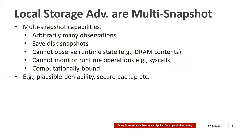A crucial observation is that local storage adversaries are usually not as powerful as online adversaries. Instead, most local storage adversaries have multi-snapshot capabilities — the adversary can have arbitrarily many observations of the device, save disk snapshots, and compare what has changed in between snapshots. However, the adversary cannot observe runtime state, such as the contents of the DRAM or file system caches, and it cannot monitor runtime operations such as syscalls. So in effect, what the adversary actually observes is the changes to the device due to writes and updates performed.